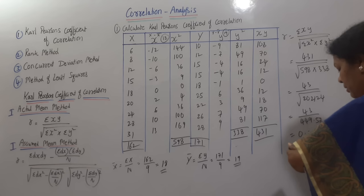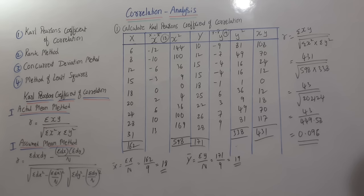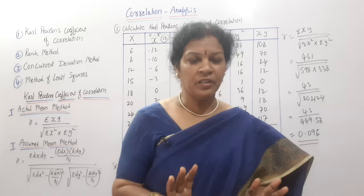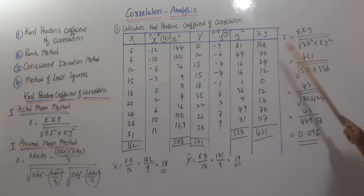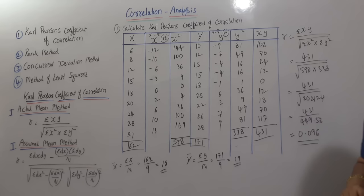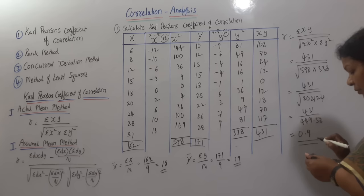0.958, so we can take it as 0.96. That is the answer — you can take a screenshot. To confirm: 431 divided by 449.58 comes to 0.958, which we round to 0.96.